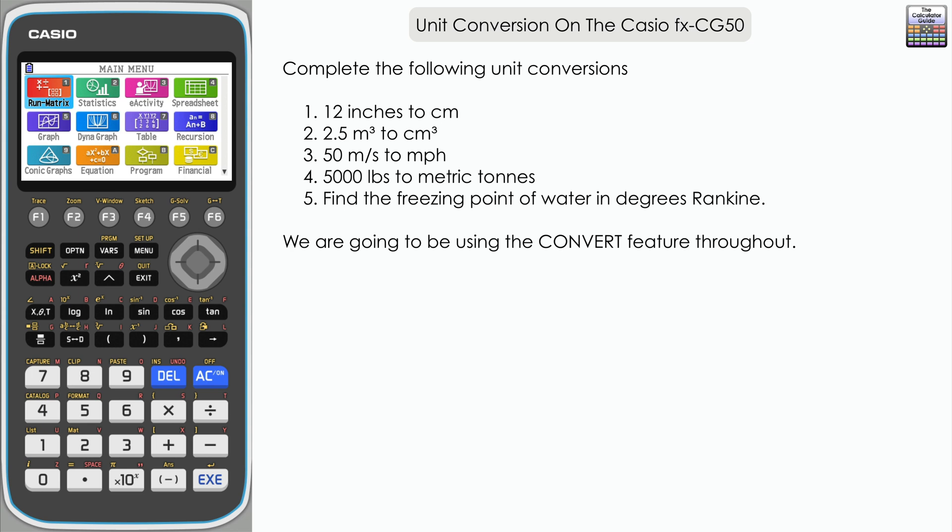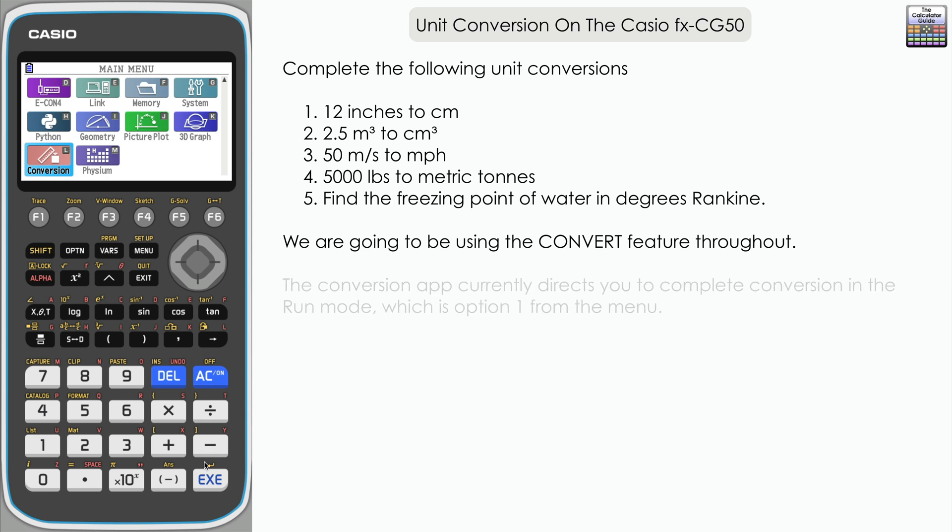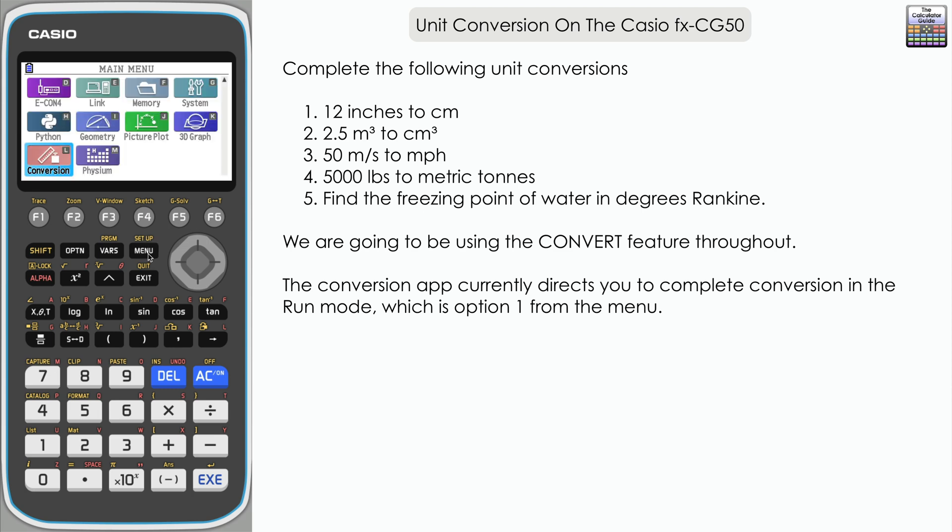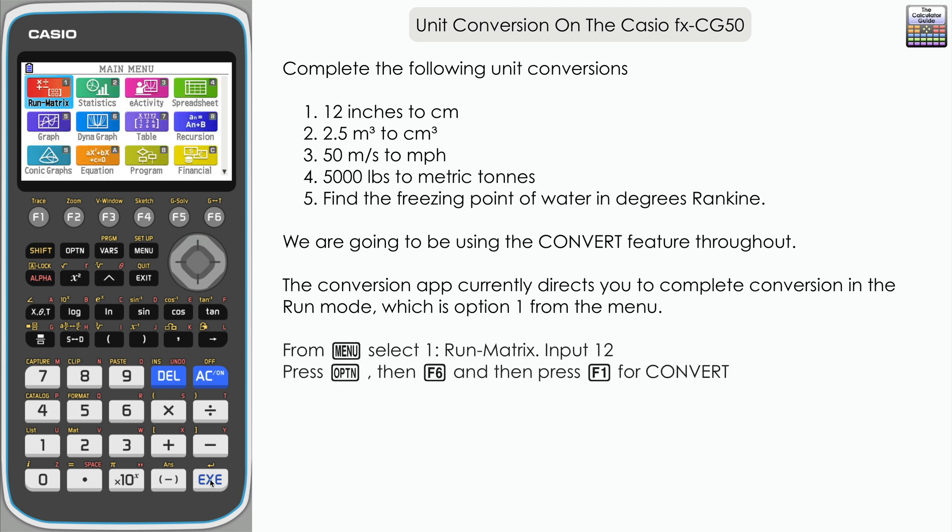Now one thing to point out before we get started, if we navigate down the main menu here it shows that there is a conversion feature option. You may have that on your calculator but currently it's available through the run menu and the option key, so actually we just need to go into run matrix to do any conversions. We're going to go back into the menu and into the run matrix mode to do these conversions.